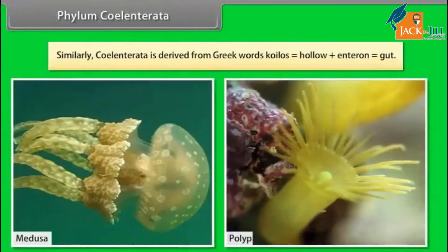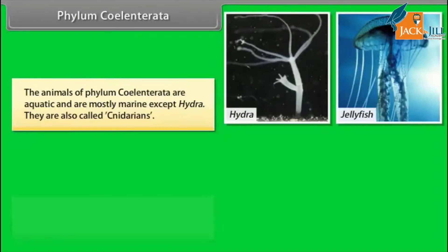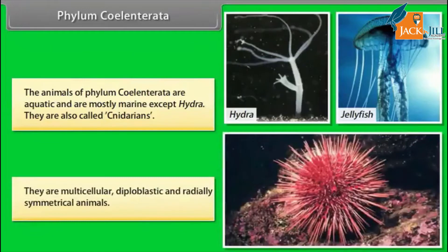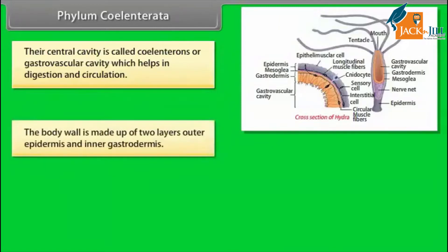Phylum Coelentrata. Coelentrata is derived from Greek words koilos, hollow, plus enteron, gut. The animals of Phylum Coelentrata are aquatic and mostly marine, except Hydra. They are also called cnidarians. They are multicellular, diploblastic, and radially symmetrical animals. Their central cavity is called the coelenteron or gastrovascular cavity, which helps in digestion and circulation. The body wall is made up of two layers: outer epidermis and inner gastrodermis.